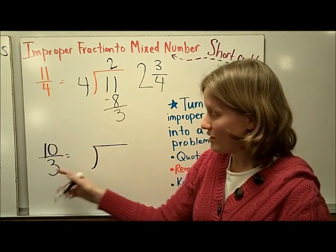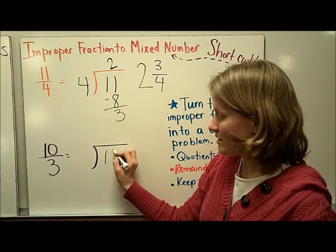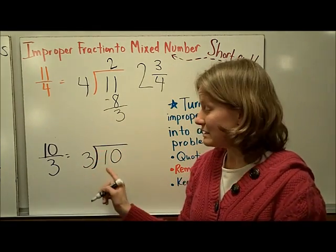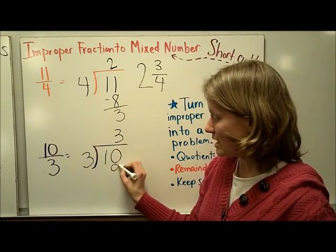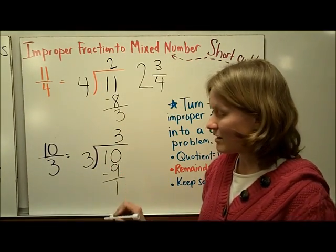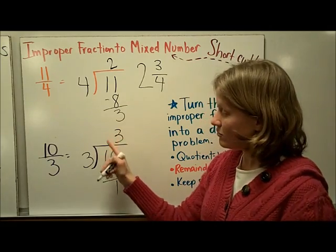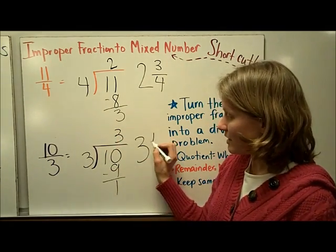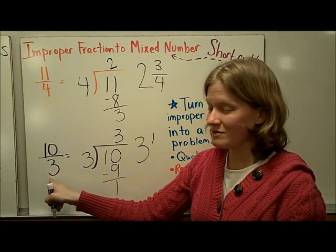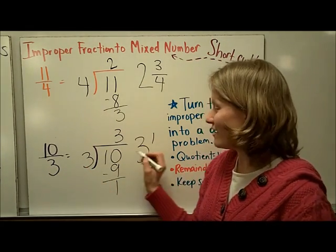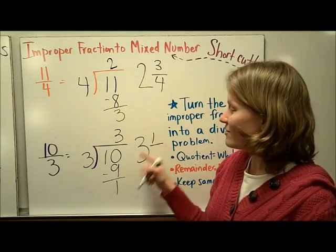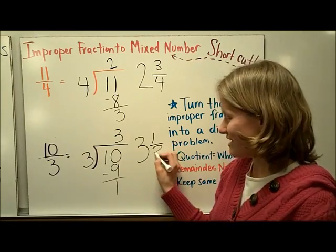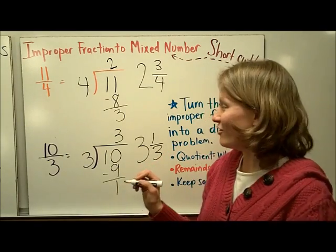Let's follow those steps again. Rewrite the problem as a division statement: 10 divided by 3. 3 goes into 10 three times; 3 times 3 is 9, and I get a remainder of 1. So I find my answer: the quotient is your whole number, your remainder is your numerator, and the denominator stays the same. So the answer is 3 and 1 third.